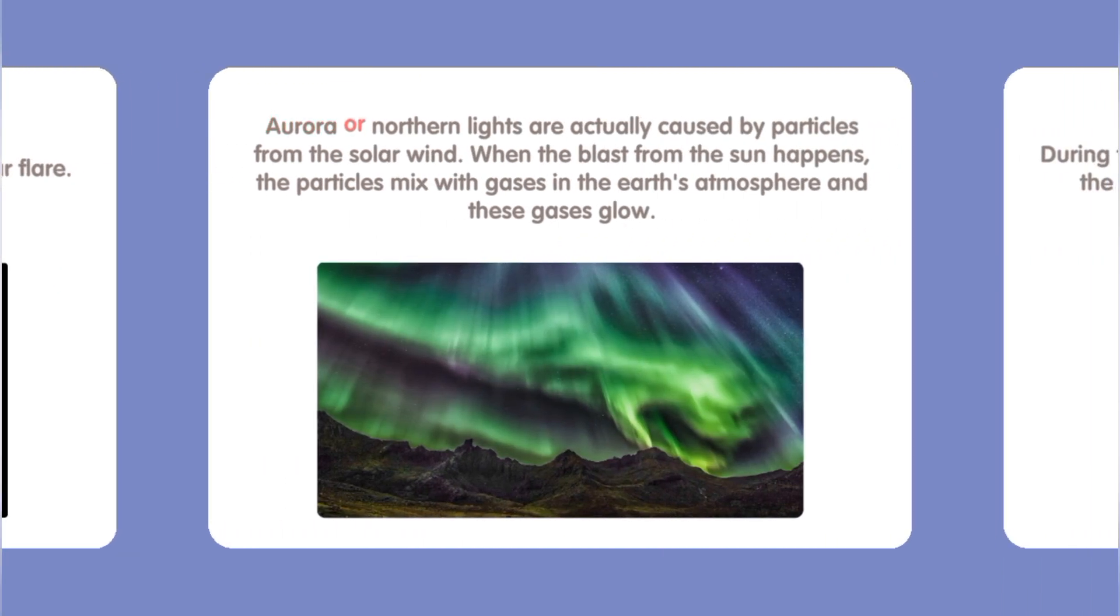Aurora, or northern lights, are actually caused by particles from the solar wind. When the blast from the Sun happens, the particles mix with gases in the Earth's atmosphere and these gases glow.